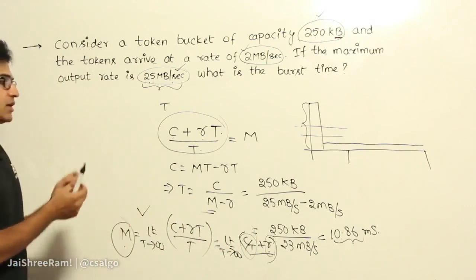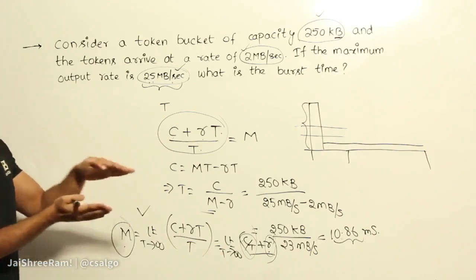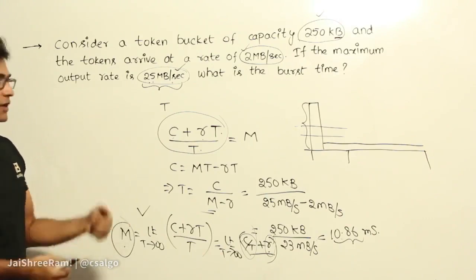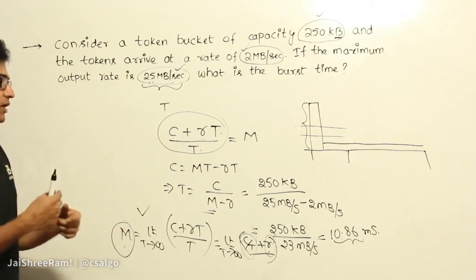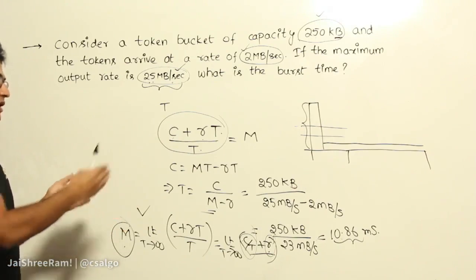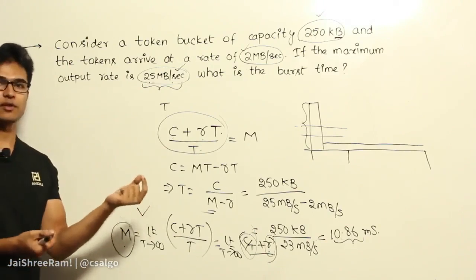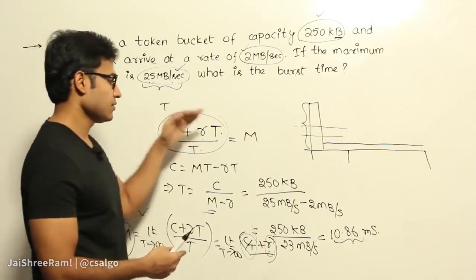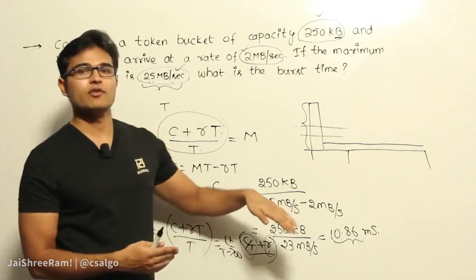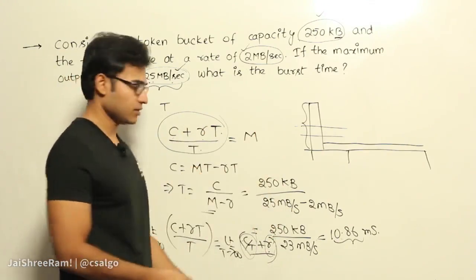But at some point in time, if the bucket is already full, if the token bucket is already full, you will experience or you will get an illusion that the rate has increased tremendously. But that sustains only over a small period of time. As we increase the time, again, the outflow will never beat the inflow. Got it?